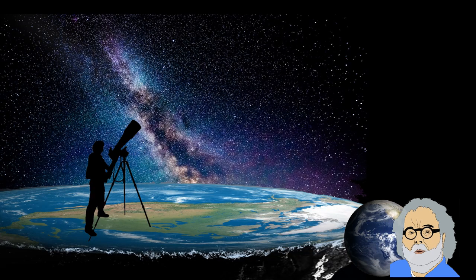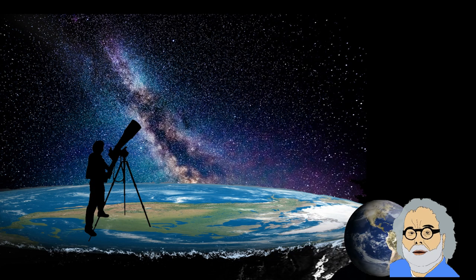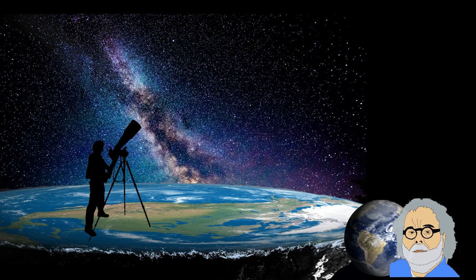In general, flat earthers claim that you cannot determine the shape of the ground you are standing on by looking at the stars. Now it seems to be impossible to replicate the star trails on a flat earth.